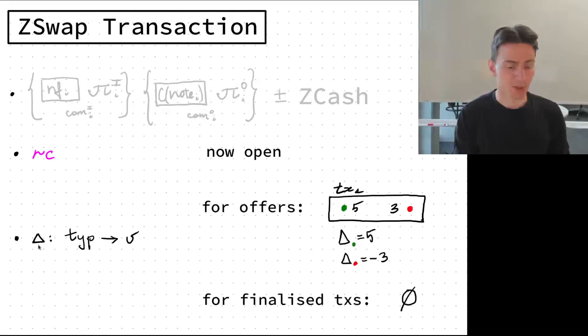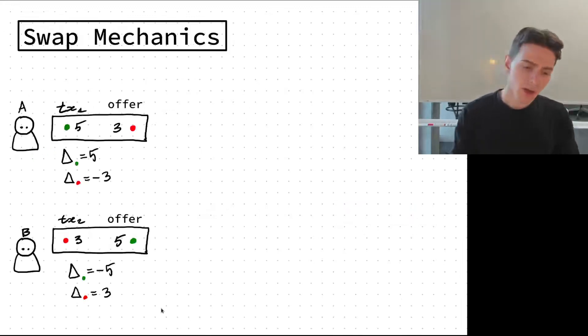We have this imbalance per type, an open set that maps types to the imbalance. For example, if you have an unbalanced transaction that sells some coins of type green and receives some coins of type red, its imbalance is five for green and minus three for red. If a transaction is finalized and balanced, its imbalance is zero.